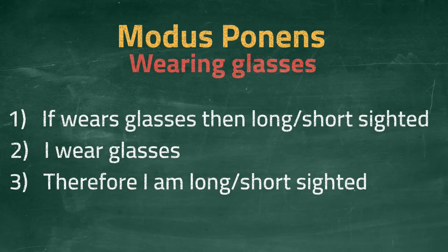Therefore, I must be long or short-sighted. In other words, I don't have perfect vision. The reasoning here is valid, and the conclusion is correct.